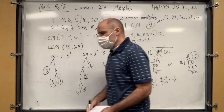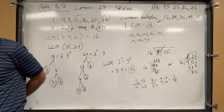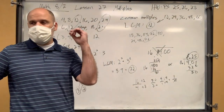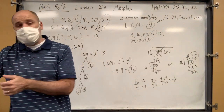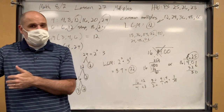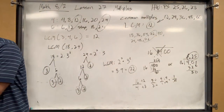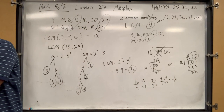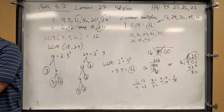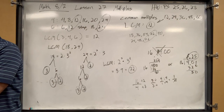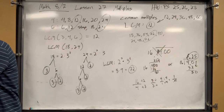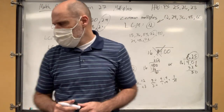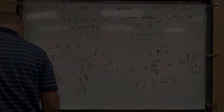So basically this is a ratio — 16 popsicles for $4. You just reduce it until you get down to one. We'll leave it at that and talk more about ratios a little bit later. Let's move on to Lesson 28.